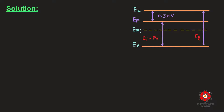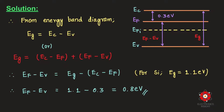The energy band gap Eg spans from Ec to Ev. The distance from Ei to Ec is Eg/2, and from Ev to Ei is also Eg/2. We will estimate Ec − Ef and Ef − Ev, highlighted in red, as these are the key parameters needed for our calculations.